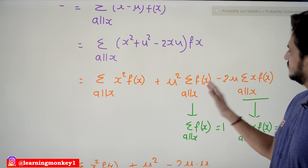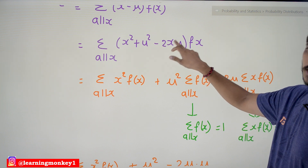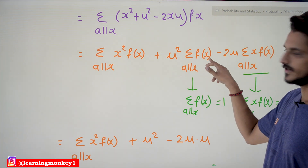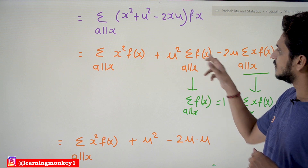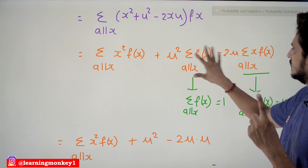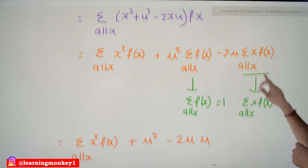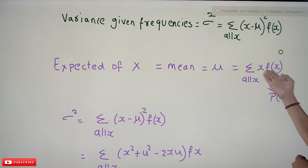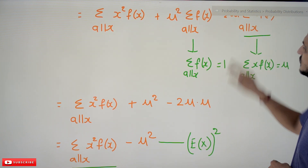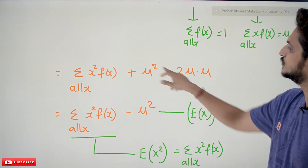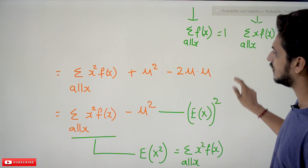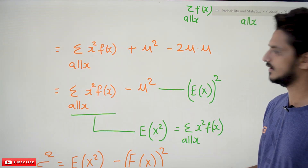Here, 2·mu is constant, so we take it out. We already discussed in our last class that the sum over all X of F(X), meaning sum of all probabilities P(X), equals 1. So the mu squared term becomes just mu squared times 1. The term minus 2·mu times the sum over all X of X·F(X) is the equation for expected value mu. So that part equals minus 2·mu times mu, which is minus 2·mu squared. Combined with mu squared, we get mu squared minus 2·mu squared equals minus mu squared. So the equation becomes: sum over all X of X squared·F(X) minus mu squared.